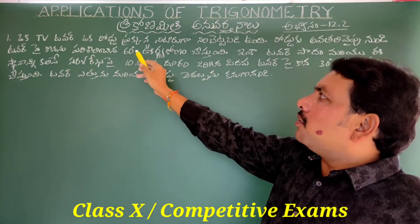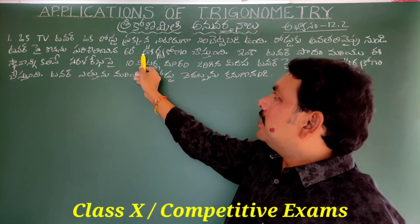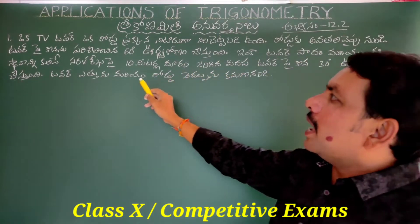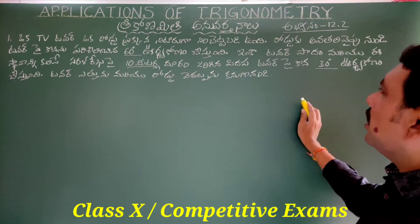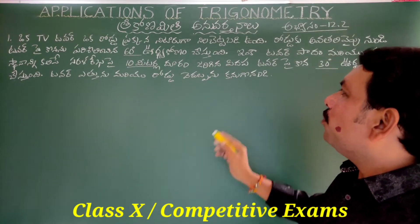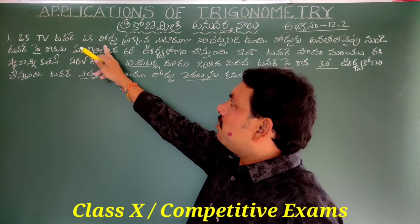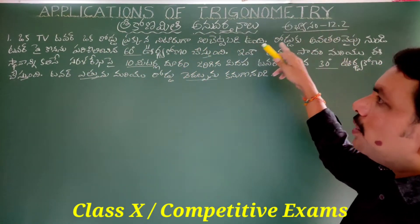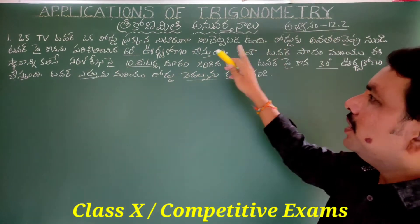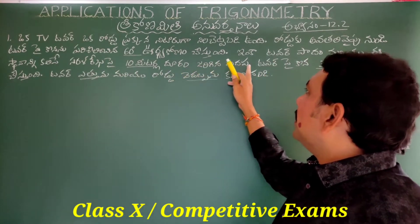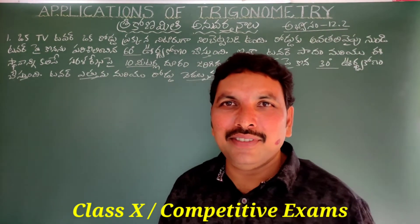Exercise 12.2, first one: One TV tower is standing vertically on the road. From a point on the road, the angle of elevation of the tower top is 60 degrees. Walking 10 meters further along the road, the angle of elevation becomes 30 degrees. Find the height of the tower and the initial distance from the road.